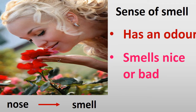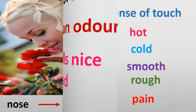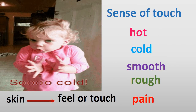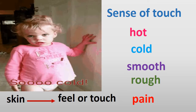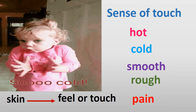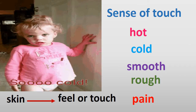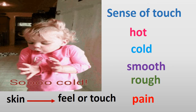We use our nose to smell. Our sense of smell tells us if something has an odor and if it smells nice or bad. We use our skin to feel or touch. Our sense of touch tells us if something is hot or cold, smooth or rough, and also if something tickles or causes pain.